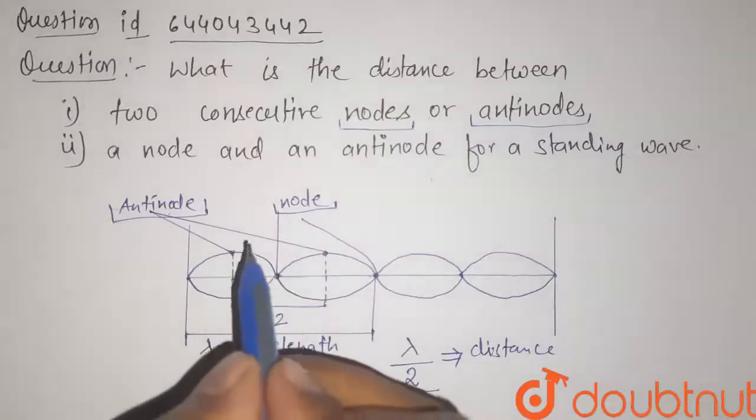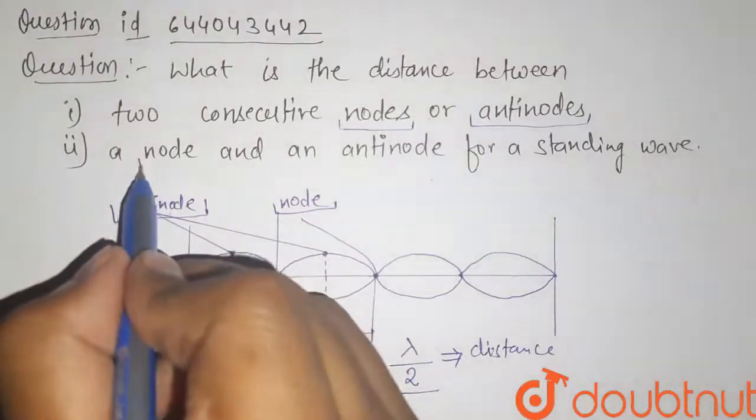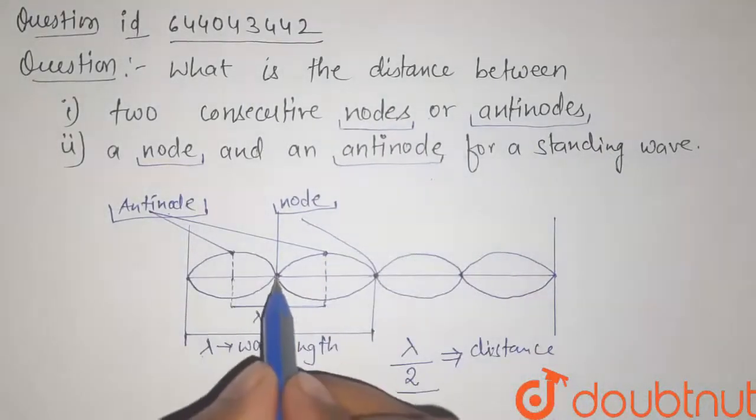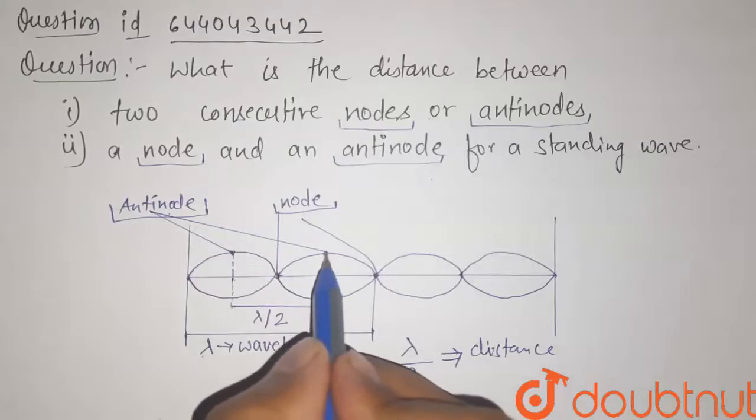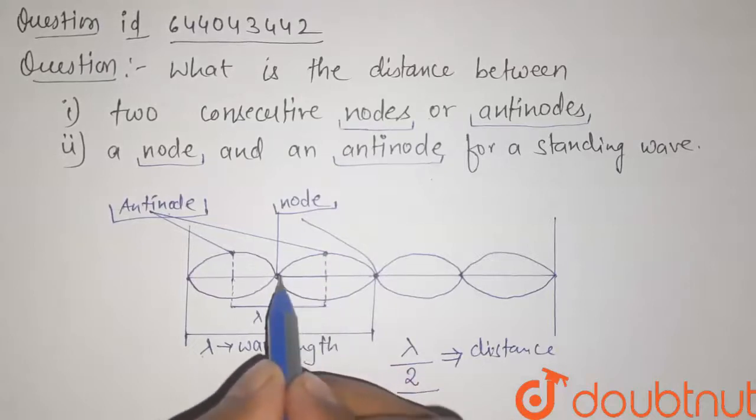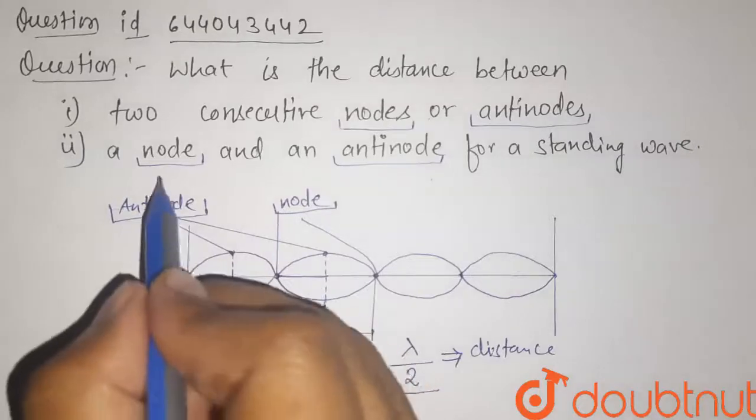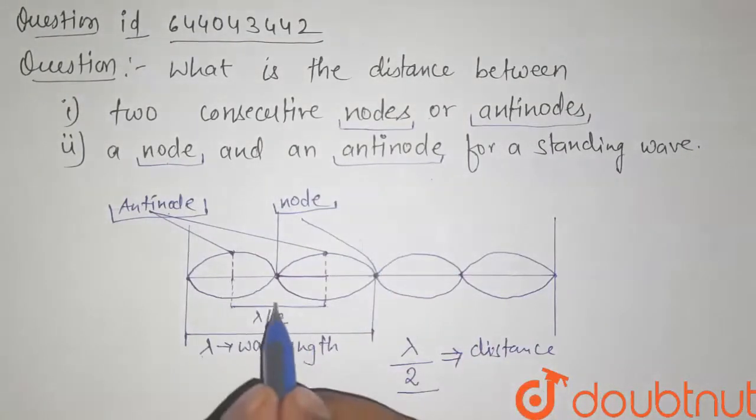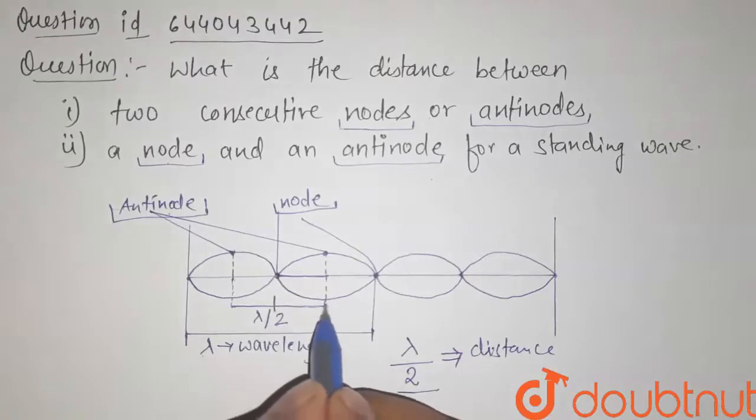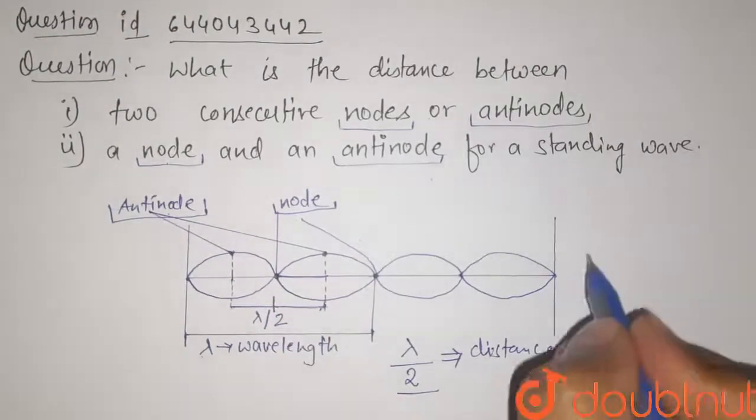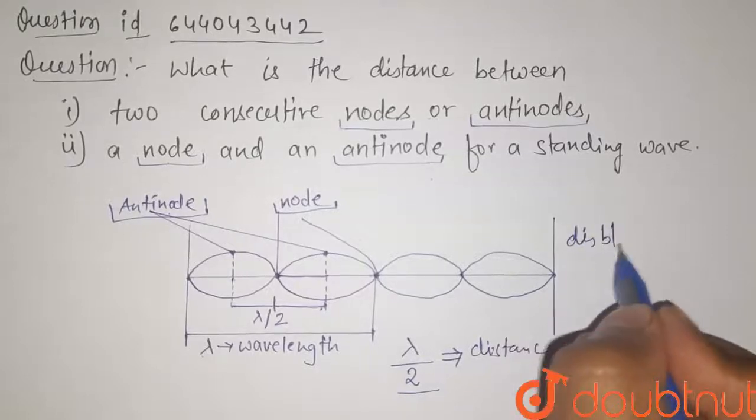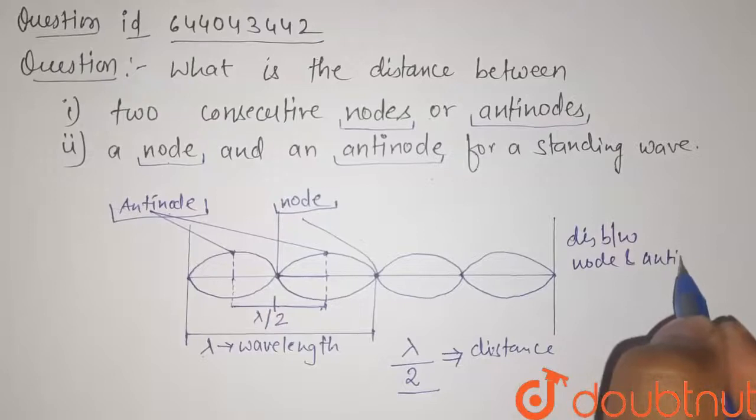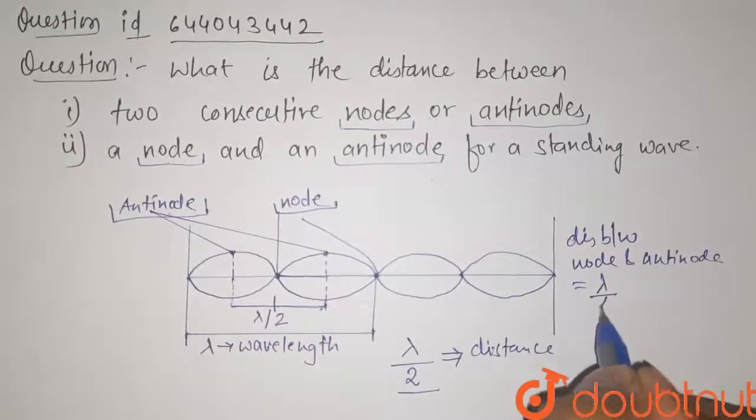Now let us find the distance between a node and an antinode. Here we can see that this is a node and this is antinode. So this distance will be our distance for a node and an antinode. Here we can see that this is half of the lambda by 2. So the distance between node and an antinode is equal to lambda by 4.